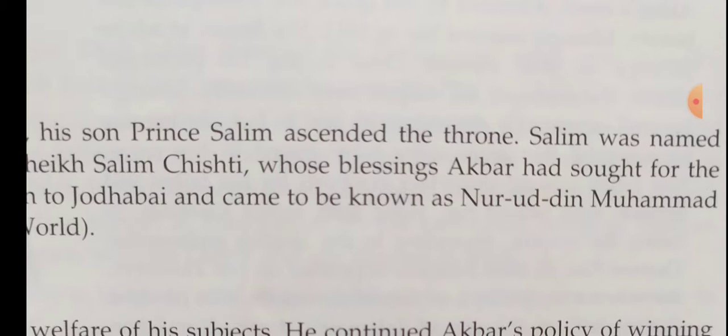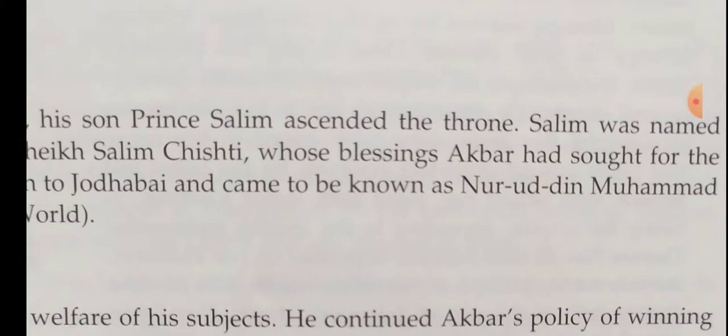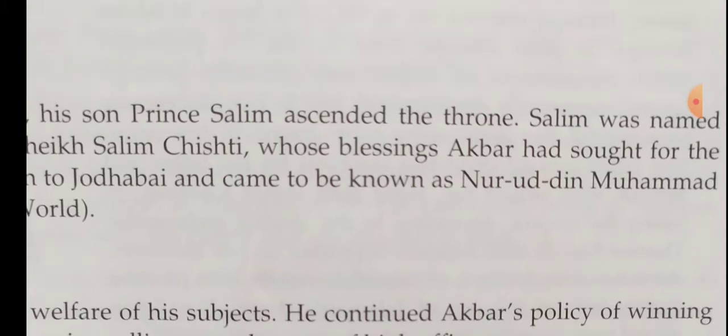Prince Khushru revolted against Jahangir and was defeated at Lahore. Guru Arjun, the great leader of the Sikhs, was executed for assisting Prince Khushru. This incident started the long conflict between the Sikhs and the Mughals.